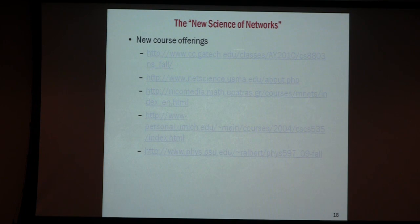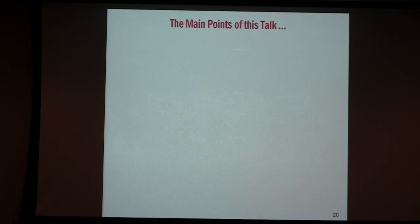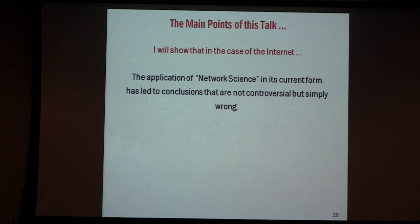The main point of this talk is to show that if you do network science and look at its capability in the context of the internet, the claim about what the internet looks like is — people like to say it is controversial — but I understand it's not controversial; it's just not right.